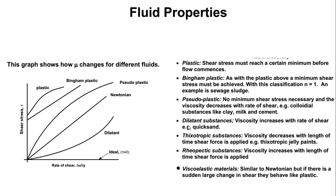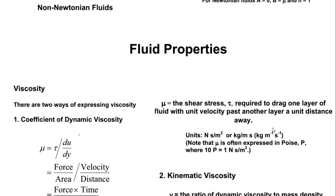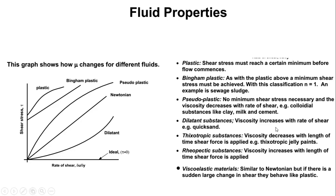The graph here shows the types of fluids: plastic fluids, pseudoplastic, Newtonian fluids, dilatant fluid, and ideal fluids. All these types can be described using the general relationship tau = A + B × (velocity gradient)^n. We need to know these graphs and how they appear when plotting shear stress against rate of shear (du/dy).